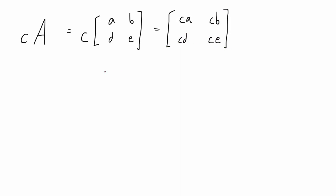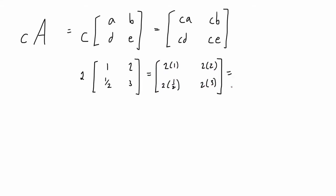Let's do an actual example — it's pretty simple. Let's say matrix A has elements 1, 2, one-half, and 3. And let's say our scalar is 2. We just multiply through element-wise. The final answer for the scalar multiple of 2 times our matrix is a new matrix with elements 2, 4, 1, and 6. So if this one was A, then this would be 2A.